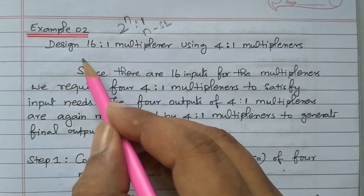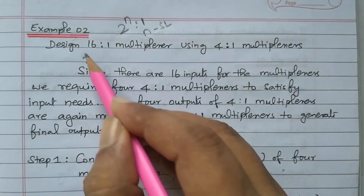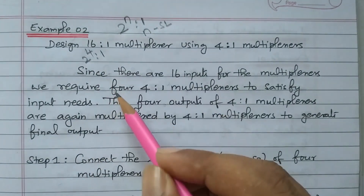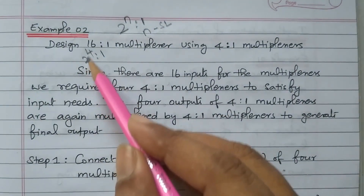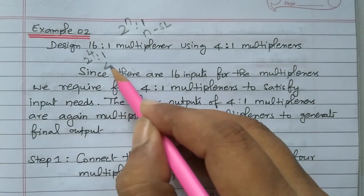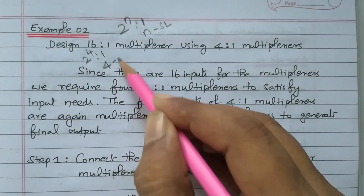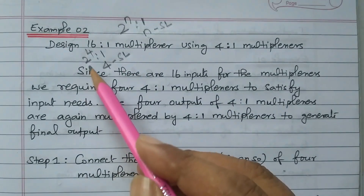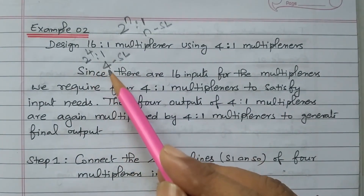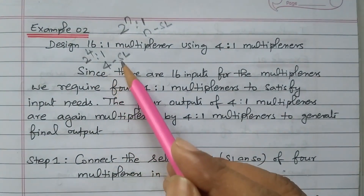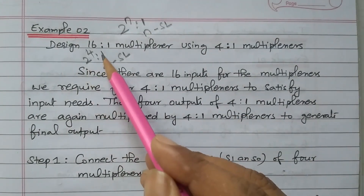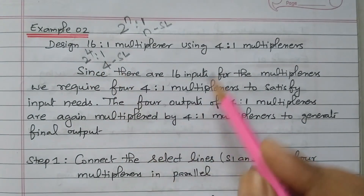A 16-to-1 multiplexer means it is 2 to the power 4-to-1, so n equals 4. We need 4 selection lines — that is 16 inputs, 1 output, and 4 selection lines.